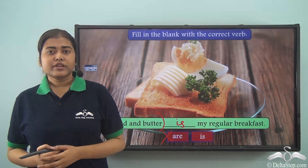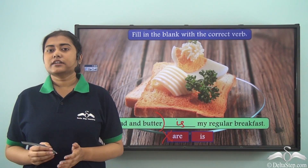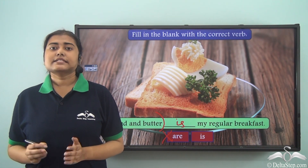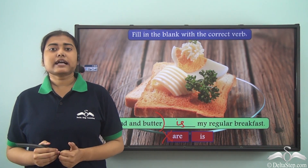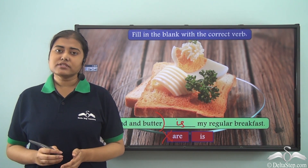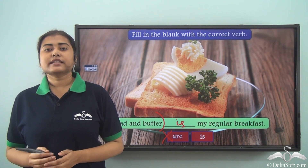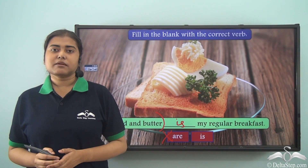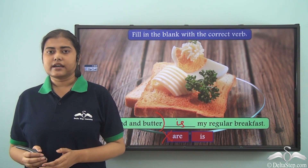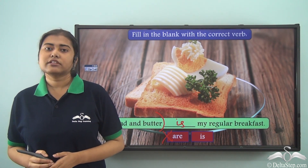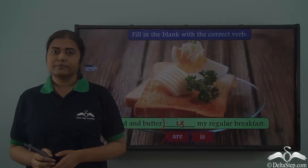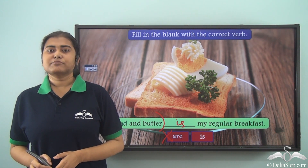What did we learn today? A subject and a verb must agree with each other in number and in person. If the subject is a compound subject, it can take either a singular verb or a plural verb — that depends on whether the compound subject is taken as a single unit or not. If it refers to a single person, thing, or idea, we use a singular verb; otherwise, with any other compound subjects, we use a plural verb. We shall soon learn about the other rules of subject-verb agreement.